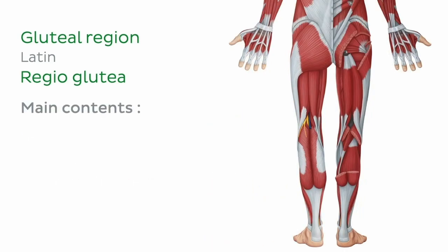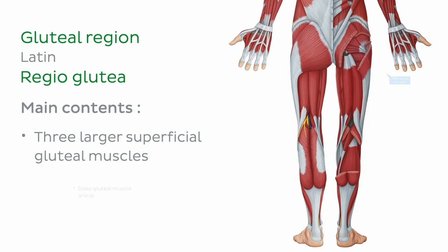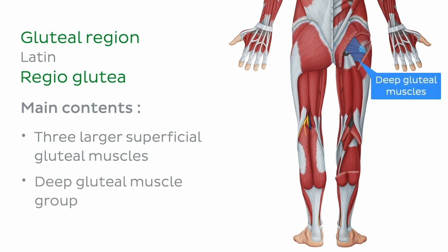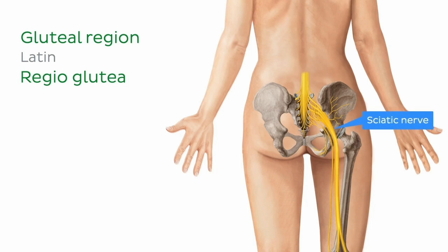The main contents include the three larger superficial gluteal muscles and the deep gluteal muscle group, also sometimes referred to as the inner hip muscles. The large nerve of the lower limb, the sciatic nerve, also travels through the gluteal region from the pelvis.